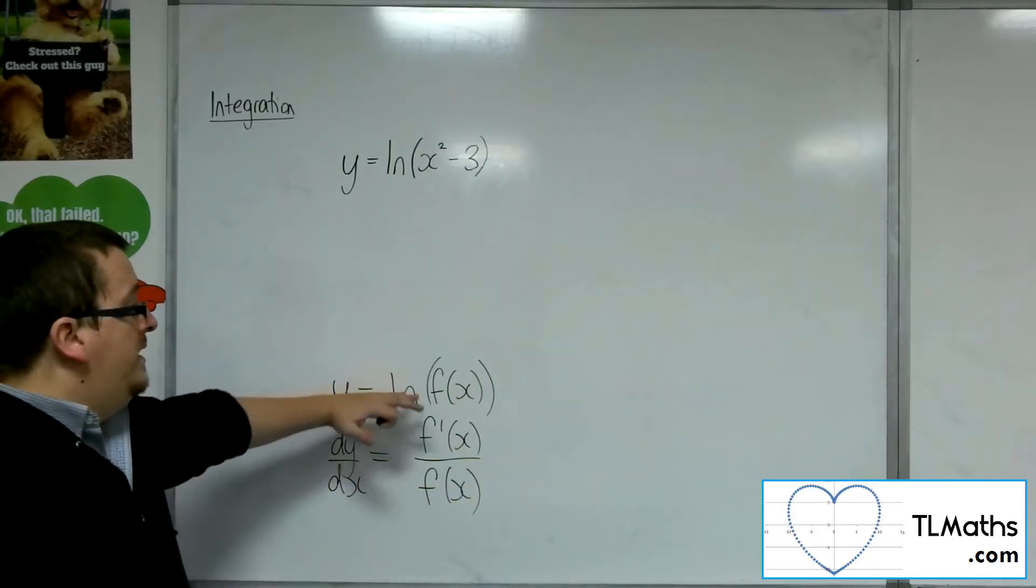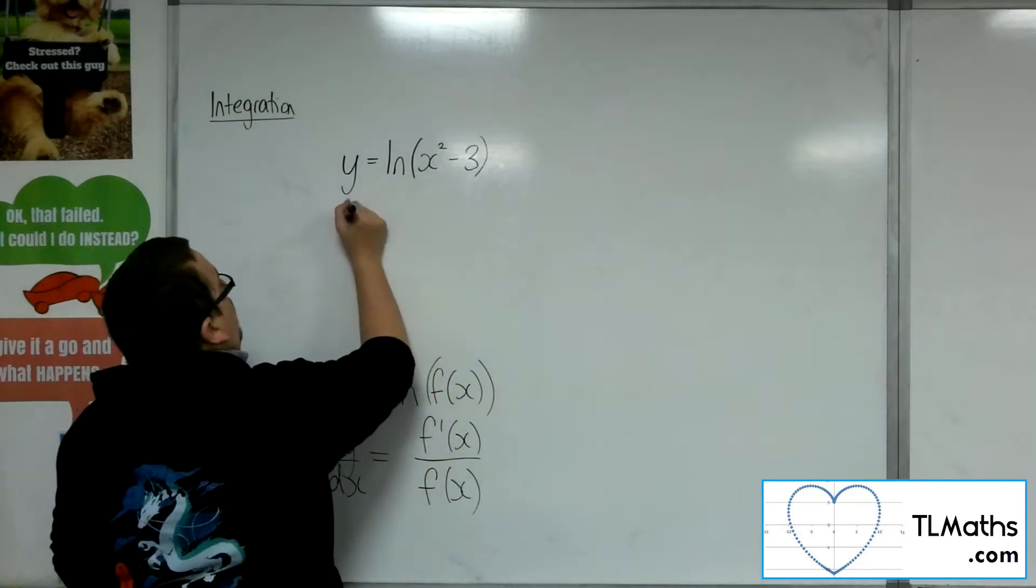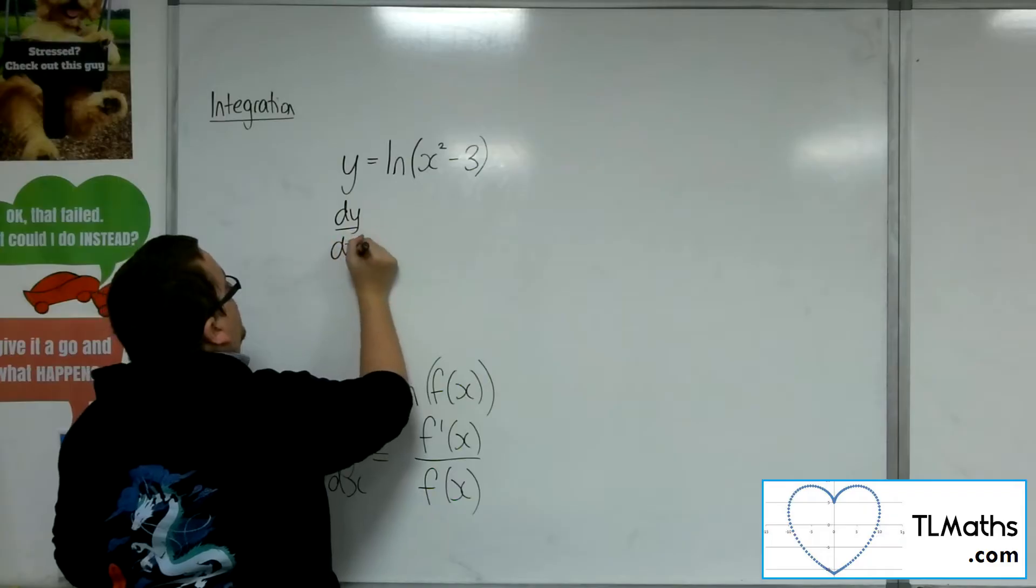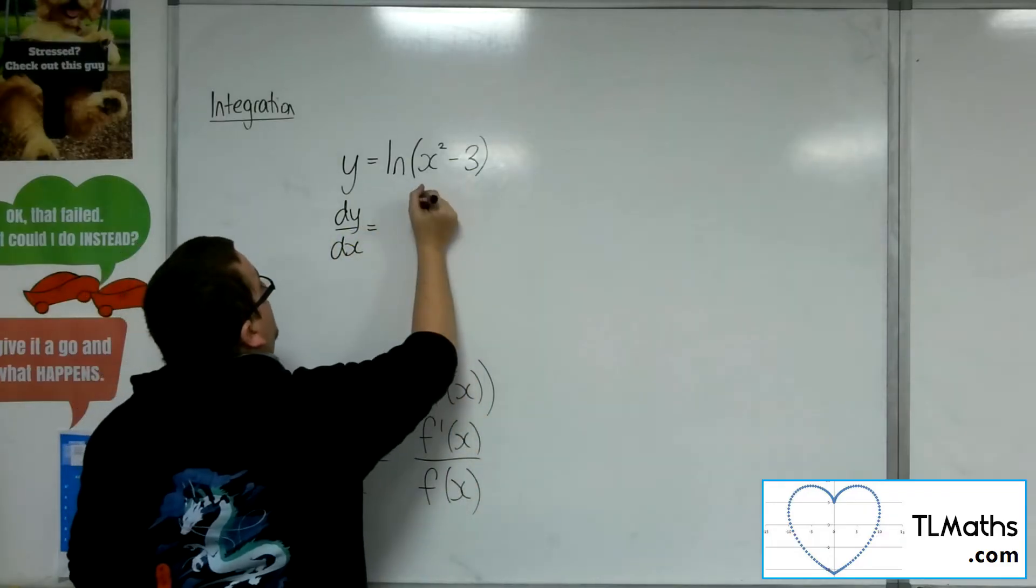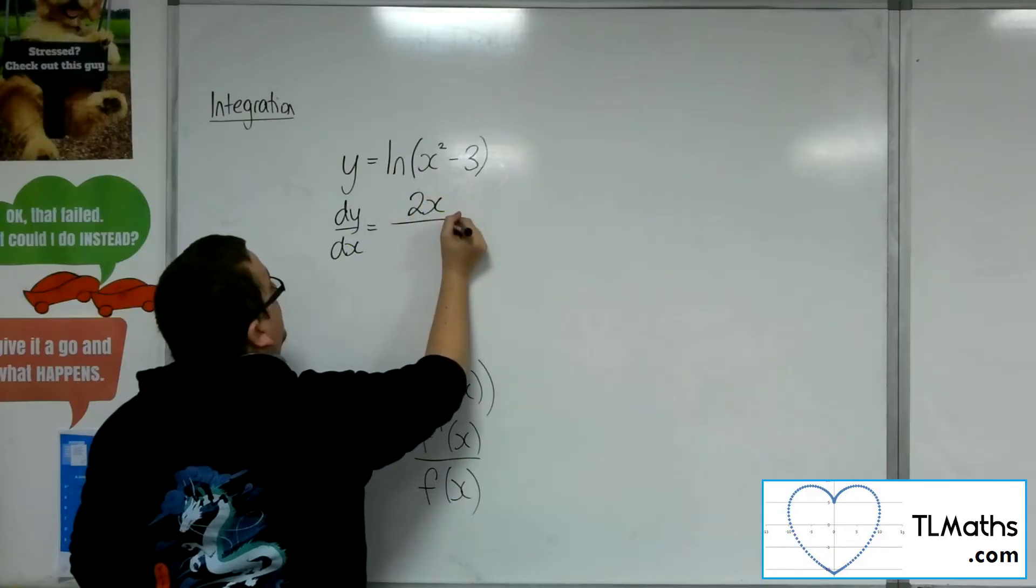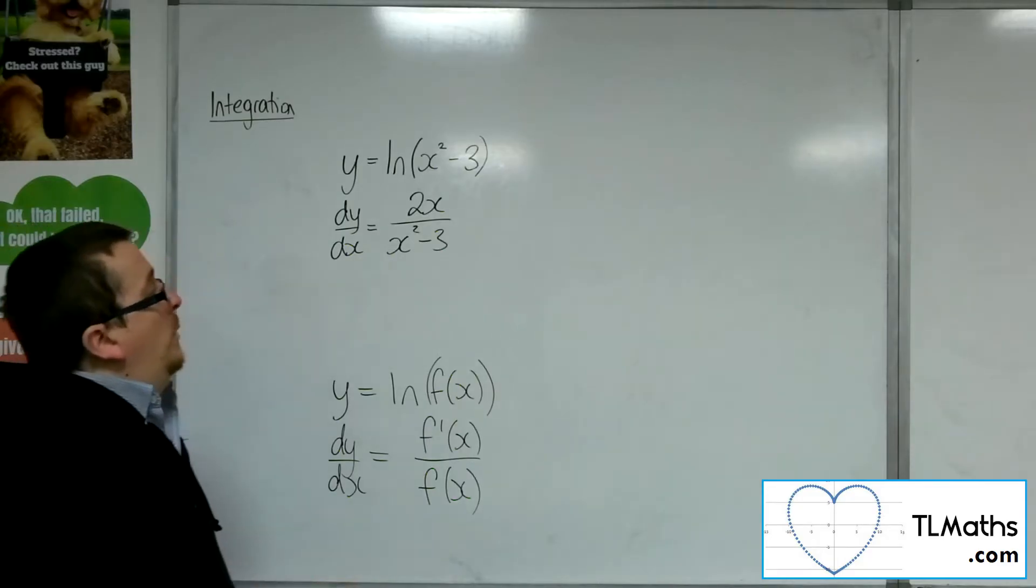So I know that process exists. dy by dx of this will be the derivative of what's inside as the numerator and the original function as the denominator. So 2x over x squared minus 3.